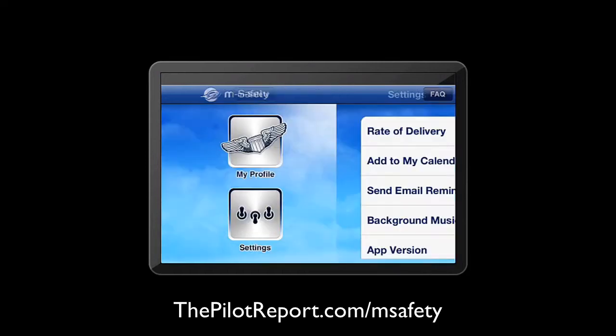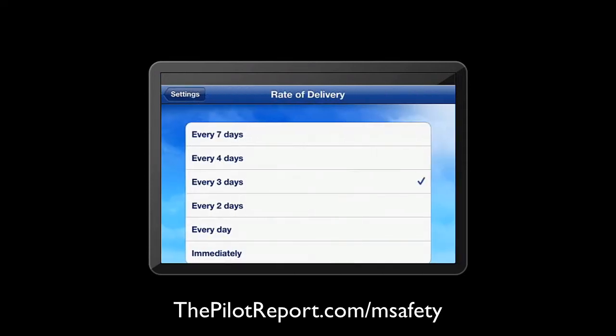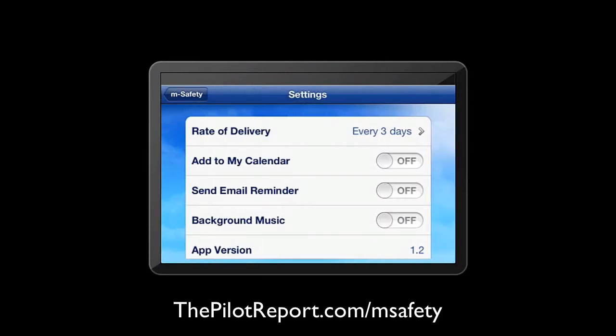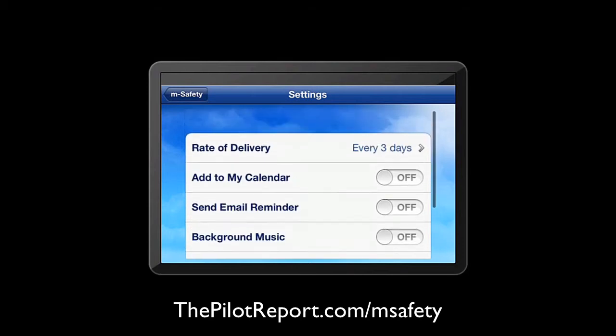I always like to start with settings to make sure the application is set up to my liking. In this application, you have some options for the rate of delivery. This is associated with a website service — it's a safety course and a paid service. It integrates with your email account to determine what you've paid for on the back end. In the rate of delivery, I have mine set to every three days. You can have it added to your calendar, be sent an email reminder, and you can also select background music if that's something you like.